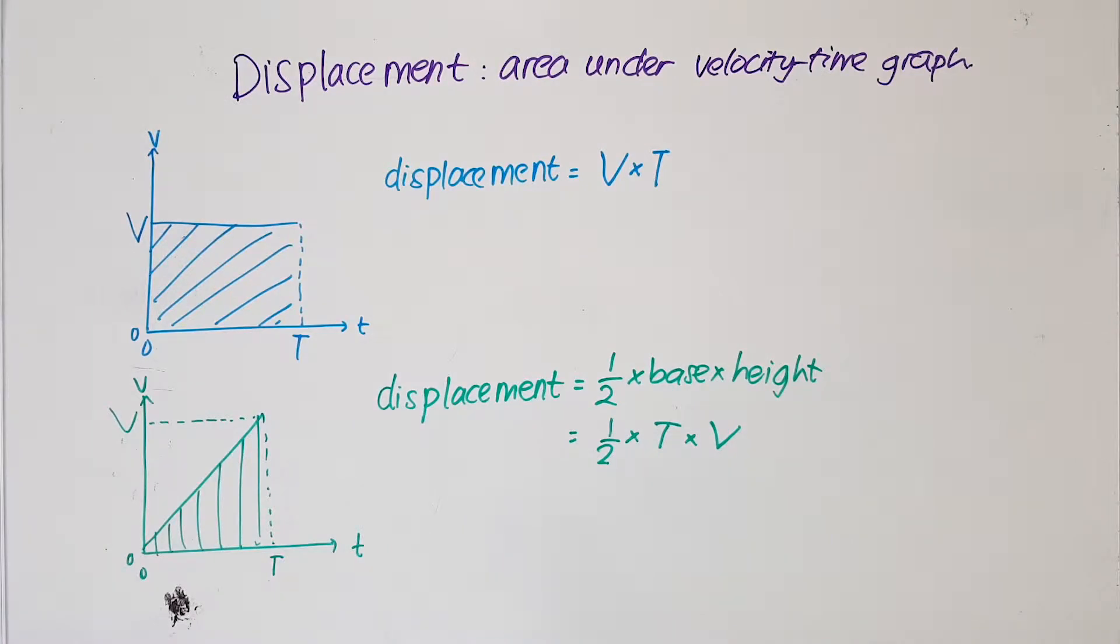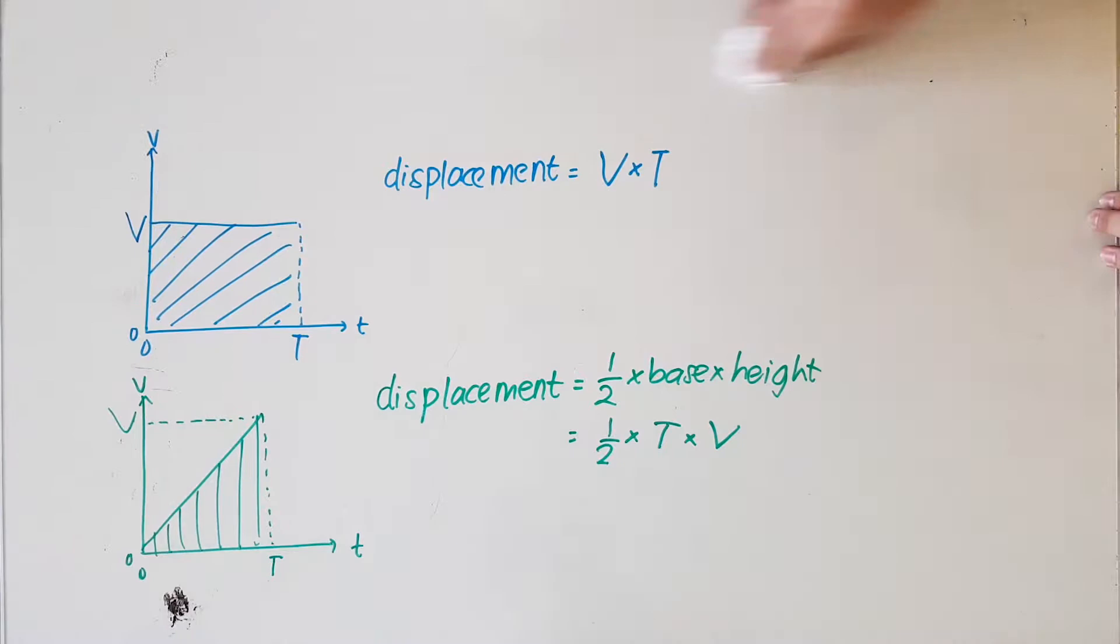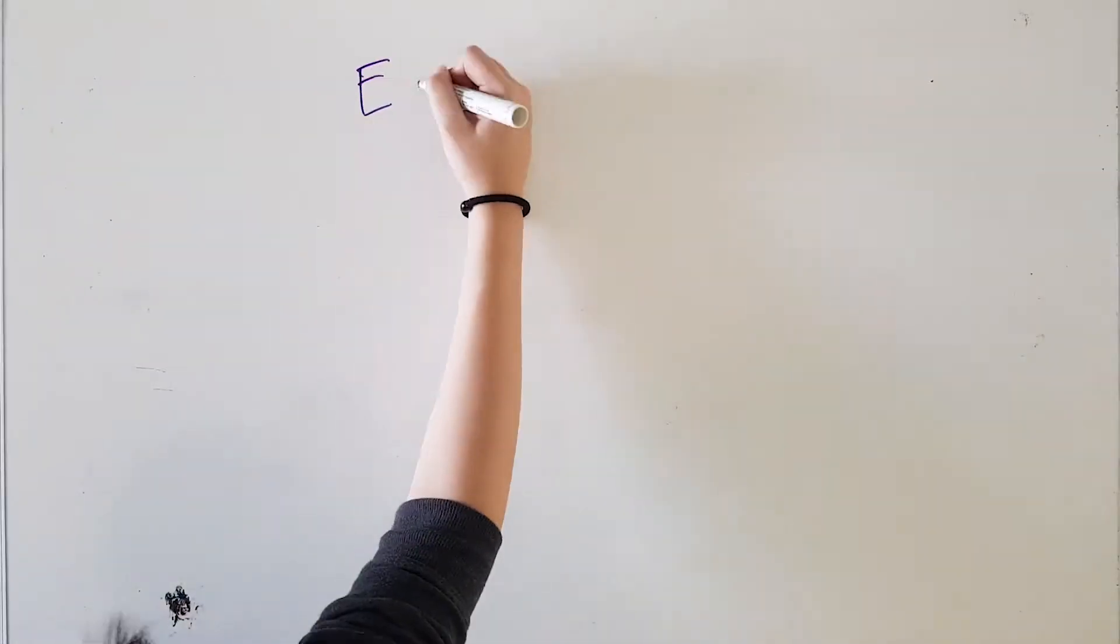Now that we've understood the basics, let's get straight into the equations. There are four main equations of motion, as you can see here.